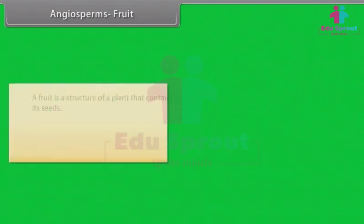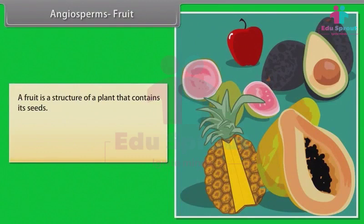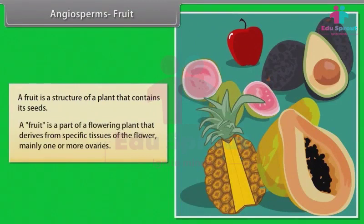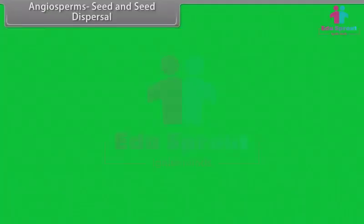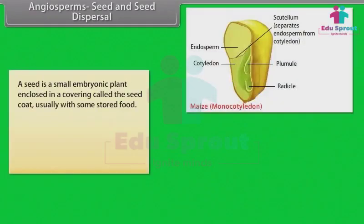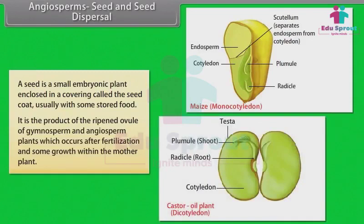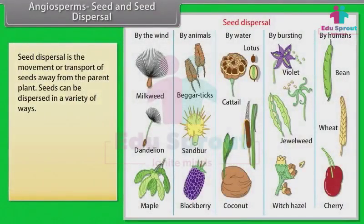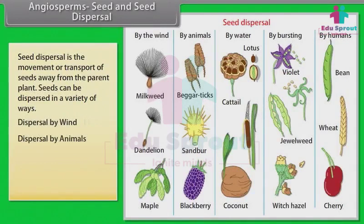A fruit is a structure of a plant that contains its seeds. A fruit is a part of a flowering plant that derives from specific tissues of the flower, mainly one or more ovaries. A seed is a small embryonic plant enclosed in a covering called the seed coat, usually with some stored food. It is the product of the ripened ovule of gymnosperm and angiosperm plants, which occurs after fertilization and some growth within the mother plant. Seed dispersal is the movement or transport of seeds away from the parent plant. Seeds can be dispersed in a variety of ways: by wind, by animals, and by other means.